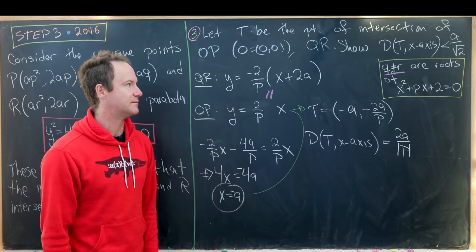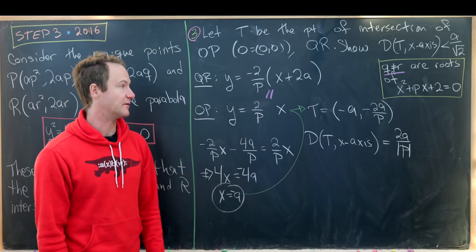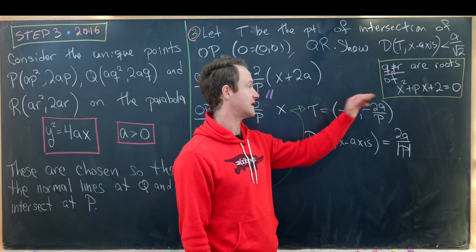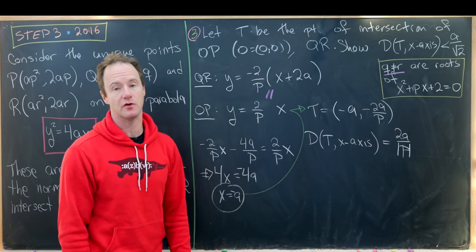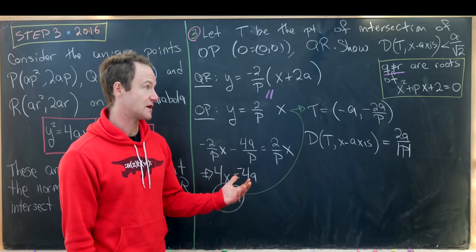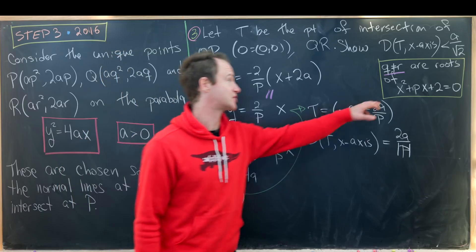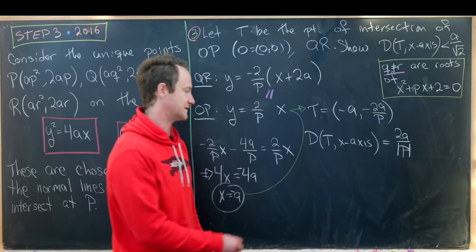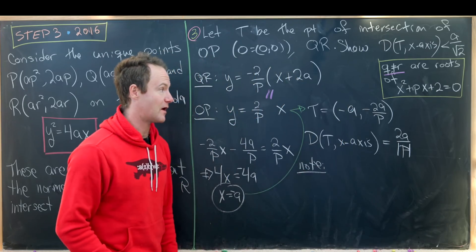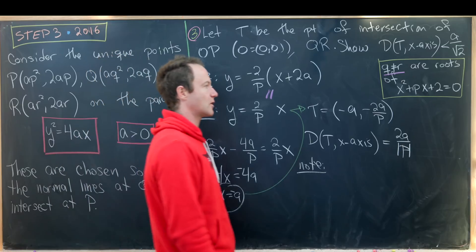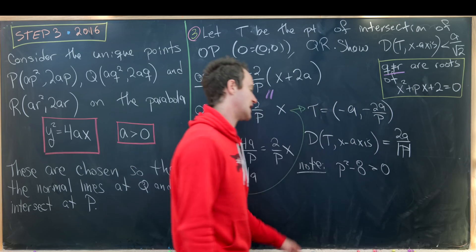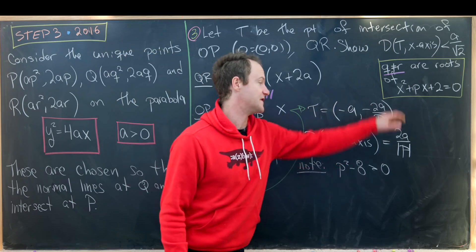But now how do we bound this above by the number that we're supposed to bound it above by? Well let's notice that Q and R are different and they're both roots of this polynomial. But the fact that they're both real roots of this polynomial means that there are two roots which means the discriminant of this polynomial is positive. The discriminant of that polynomial is P² - 8. That is positive. That's the discriminant of this polynomial.